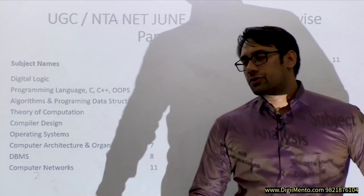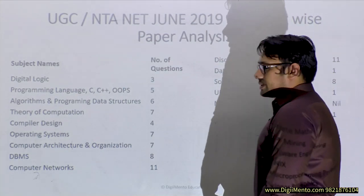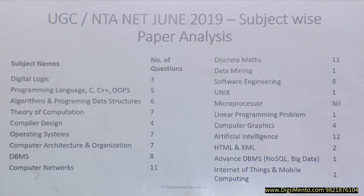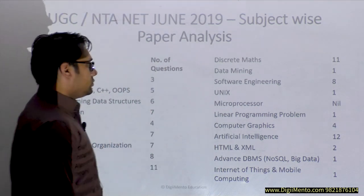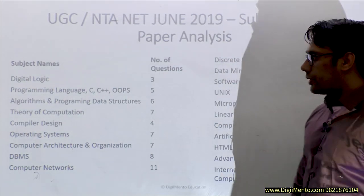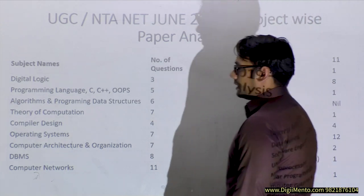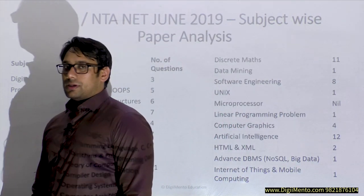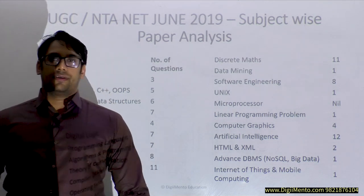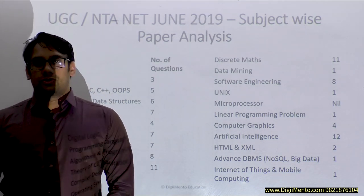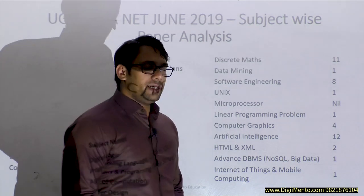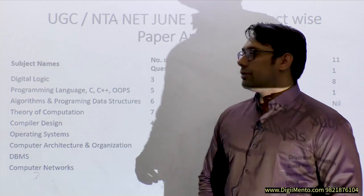Most of you have given this UG CSNET June 2019 examination. This is a subject-wise analysis of June 2019 — about what are the subjects which are very important and what are the subjects which are less important. Less important means if they are asking only one or two questions from a subject. If the subject is very lengthy and very large, obviously you can leave that portion.